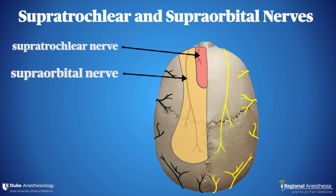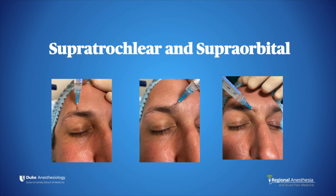Here we can see the supratrochlear and supraorbital nerves. The supratrochlear nerve's sensory distribution is depicted in the tan color. The supraorbital foramen can be easily palpated by following the orbit rim about two centimeters from the midline in adults. It is located approximately at the same sagittal plane as the pupil in most patients.